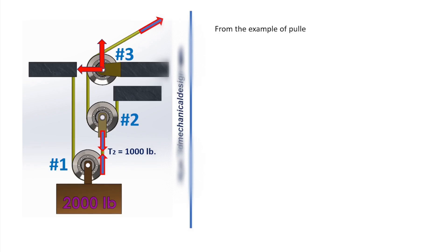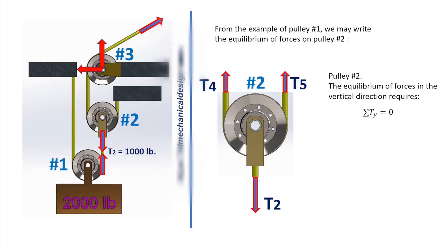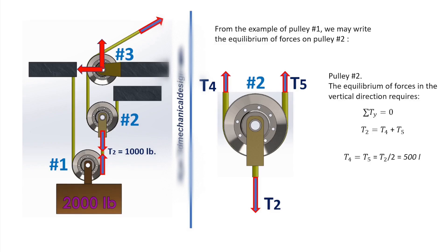From the example of pulley number 1, we may write the equilibrium of forces on pulley number 2. The equilibrium of forces in the vertical direction requires: sum of forces Y equals T2 equals T4 plus T5. T4 equals T5 equals T2 divided by 2, equals 500 pounds.